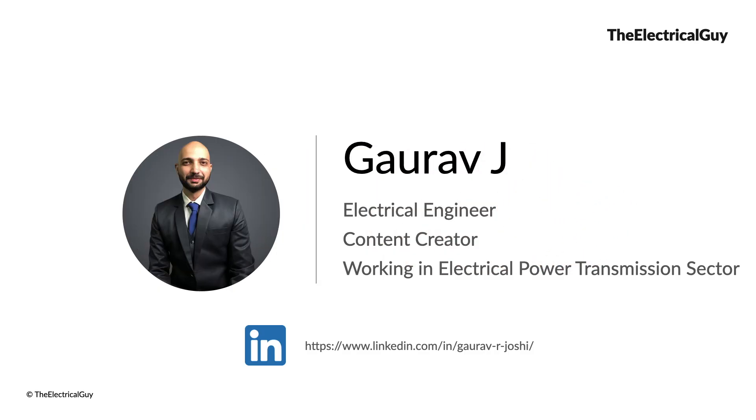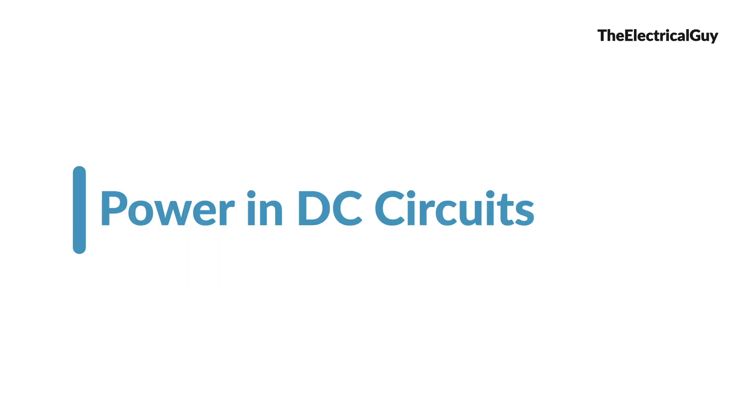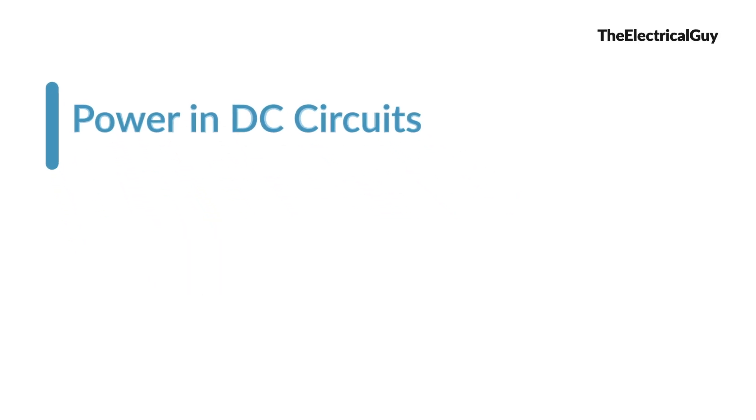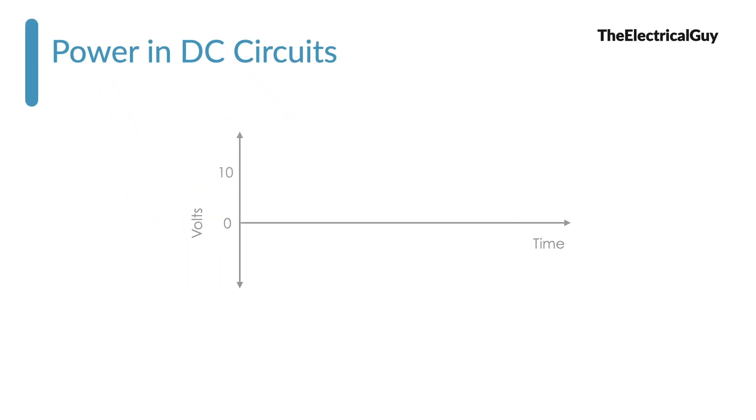Now let's talk about the RMS value. We know that the voltage or current in case of DC system never changes its direction. At every instance, it is constant. I have a detailed video on DC. You can check that out. Link is in the description. Since the voltage and current are constant in DC circuits, calculating power, voltage or current is very very easy.